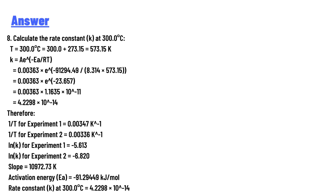Calculate the rate constant k at 300°C. T = 300 + 273.15 = 573.15 K. Using the Arrhenius equation k = A × e^(−Ea/RT): k = 0.00363 × e^(−91294.49 / (8.314 × 573.15)) = 0.00363 × e^(−23.675) = 0.00363 × 1.1635 × 10⁻¹¹ = 4.2298 × 10⁻¹⁴.